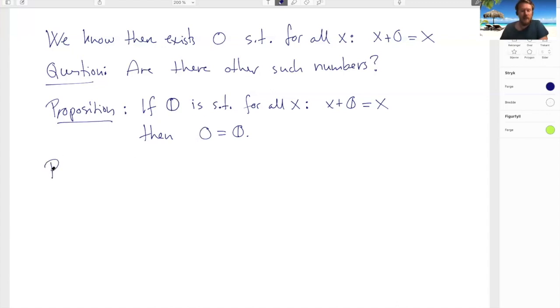So let's prove it. And in the proof we'll need one additional axiom, so we need commutativity for addition. We need that x plus y is always equal to y plus x.